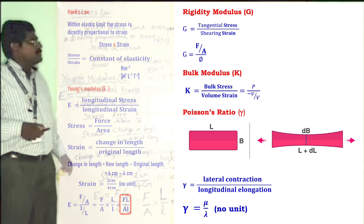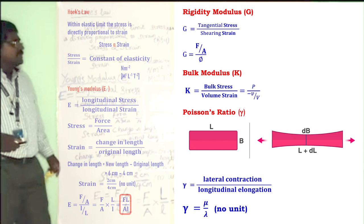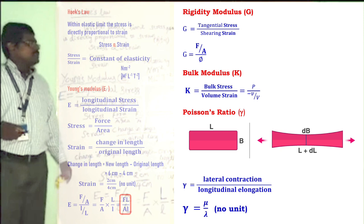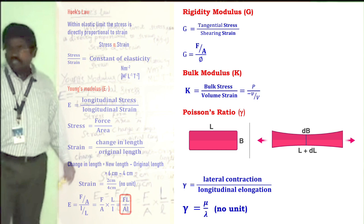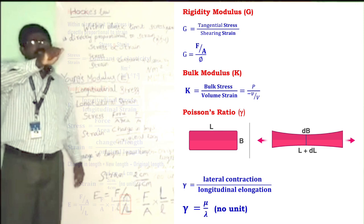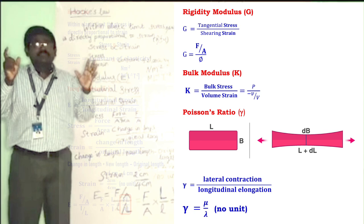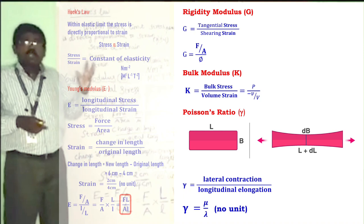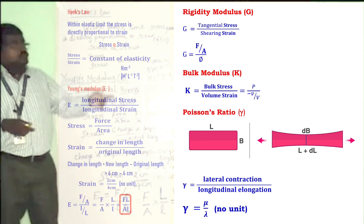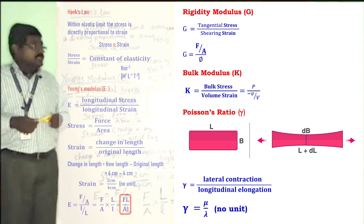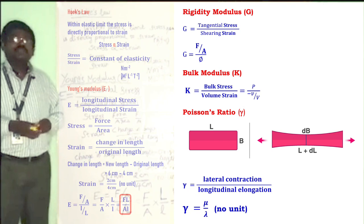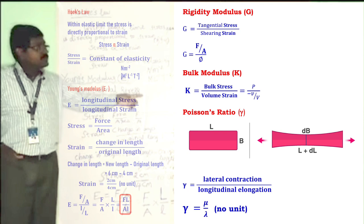Bulk modulus, symbol capital K. K equals bulk stress by volume strain. Bulk stress is known as pressure P. I compress the material — pressing in all the sides — so the volume decreases. The new volume will be smaller than the original volume, giving a negative change. So we use a negative symbol: bulk modulus is P divided by minus delta V by V. Pressure is applied in all directions, volume is decreased, hence we use the negative symbol.